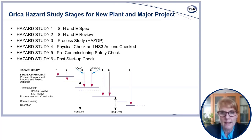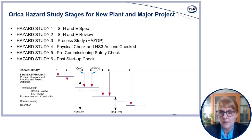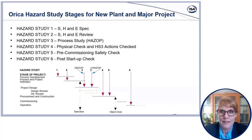Hazard Study 3, which is the HAZOP, is carried out as soon as suitable design information is available. CHAZOP, or computer/control HAZOP, is a variation carried out at a similar stage of the project, usually after the HAZOP. Hazard Studies 4 and 5 are pre-commissioning studies and must be completed before process materials are introduced. Hazard Study 6 is a study of initial operation, to be completed not earlier than three and not later than six months after beneficial production. I'm now going to hand over to Dean, who will take us through some practical application of the HAZOP study.